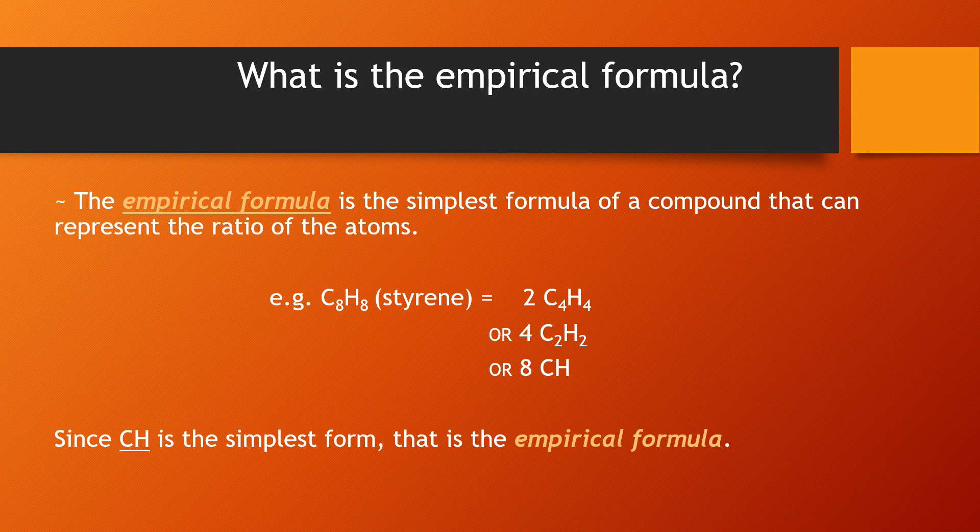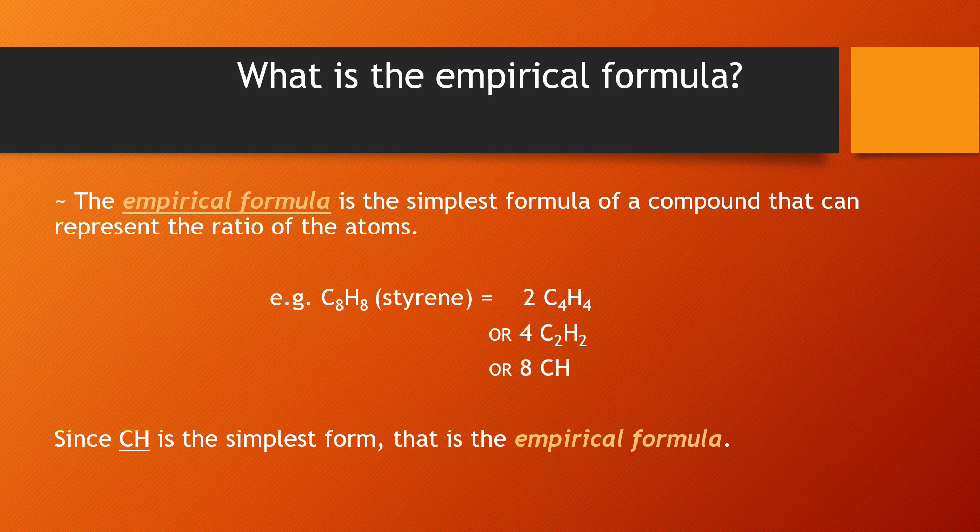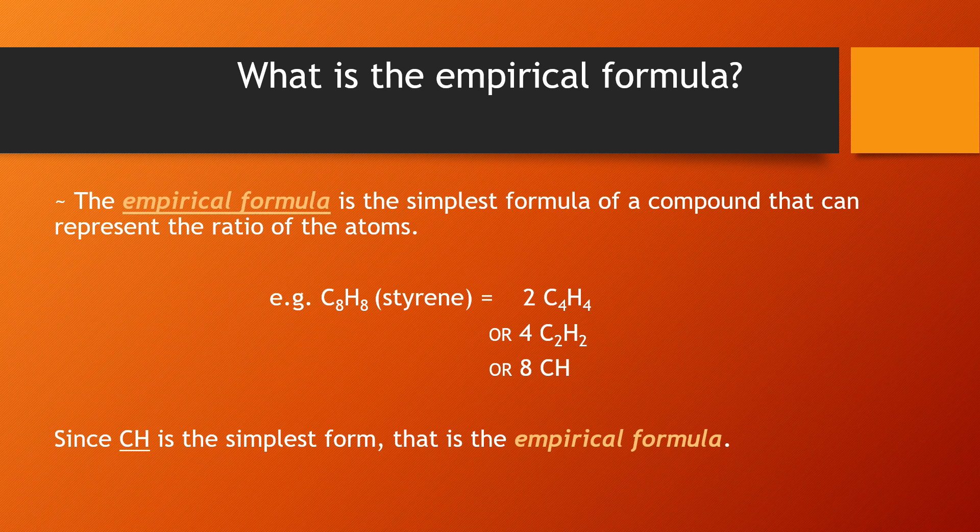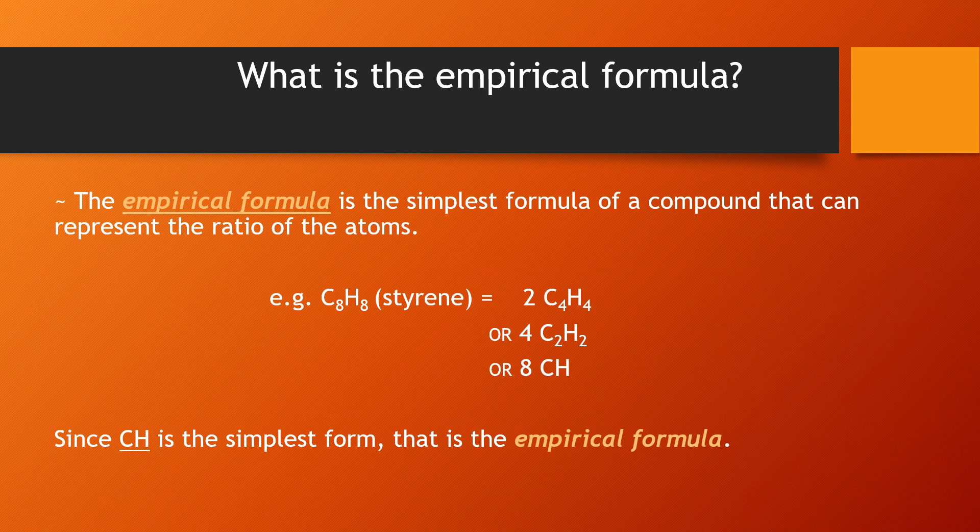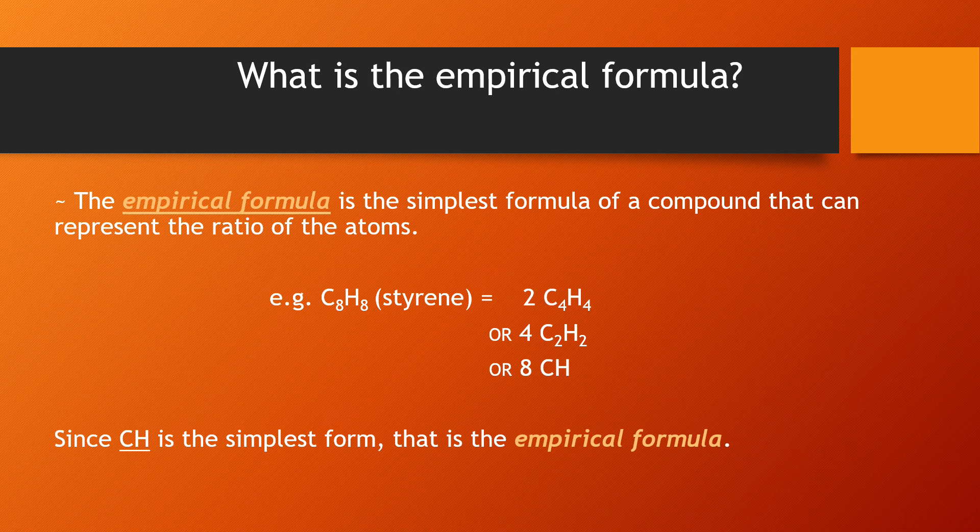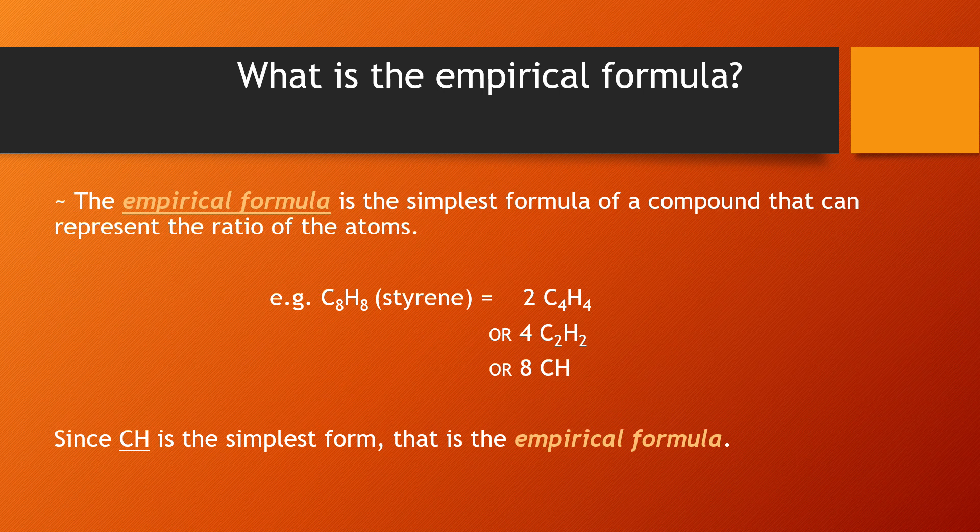So what is the empirical formula? The empirical formula is the simplest formula of a compound that can represent the ratio of the atoms. For example, if you have a compound styrene with a formula C8H8, it can be equal to 2 C4H4s, 4 C2H2s, or 8 CHs. Since CH is the simplest form, that is the empirical formula.